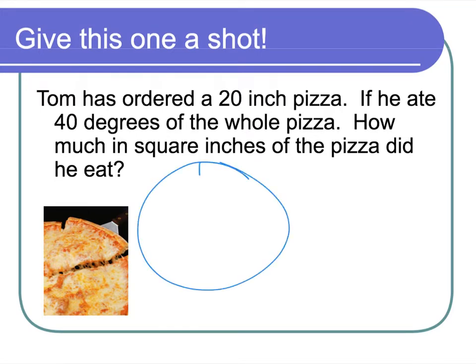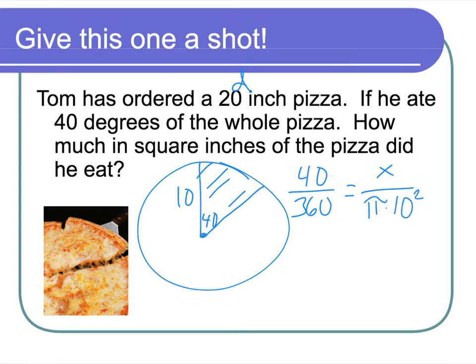So there's my circle. If I'm talking about 40 degrees, we'll say it's about that. A 20-inch pizza, well, 20-inch pizza, that's my diameter, right? So my radius would be 10. And I want to figure out the area right here of this whole thing. So let's figure that out.